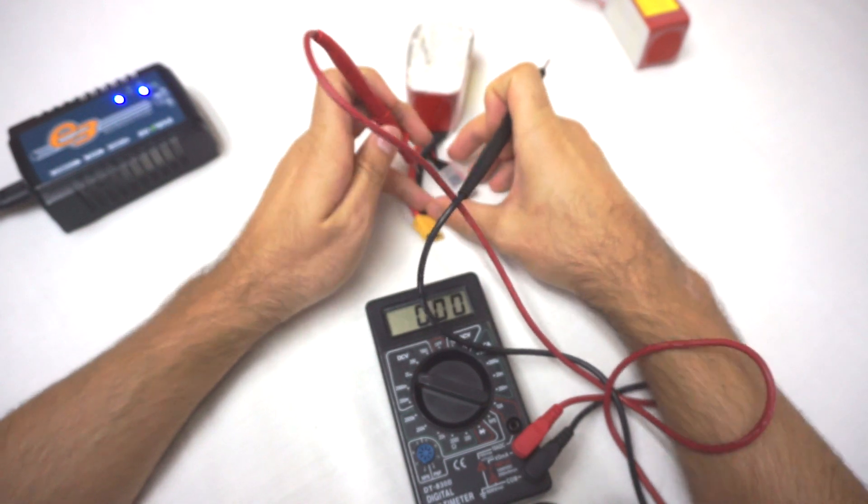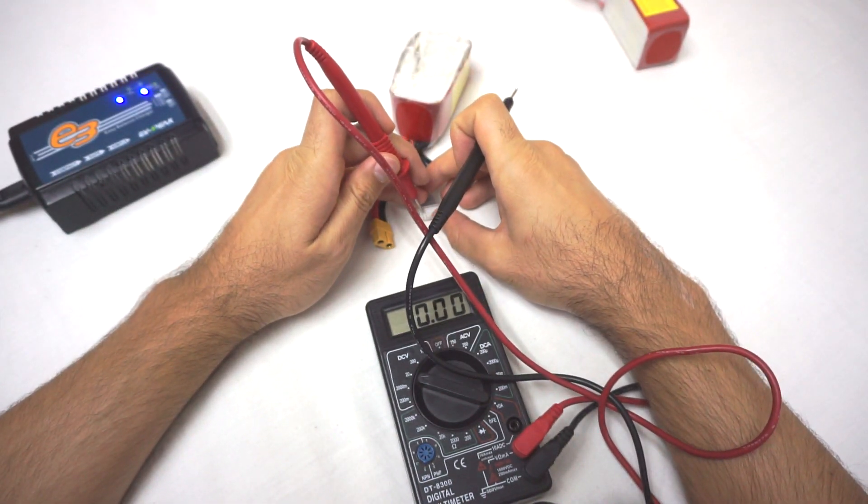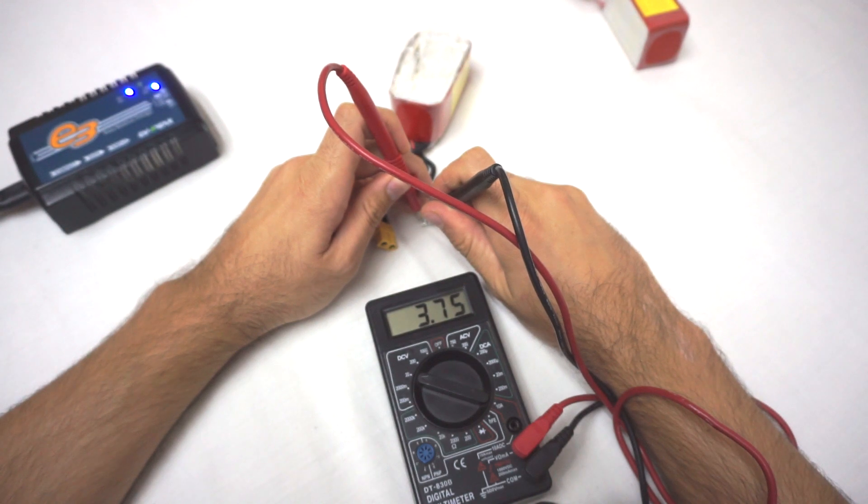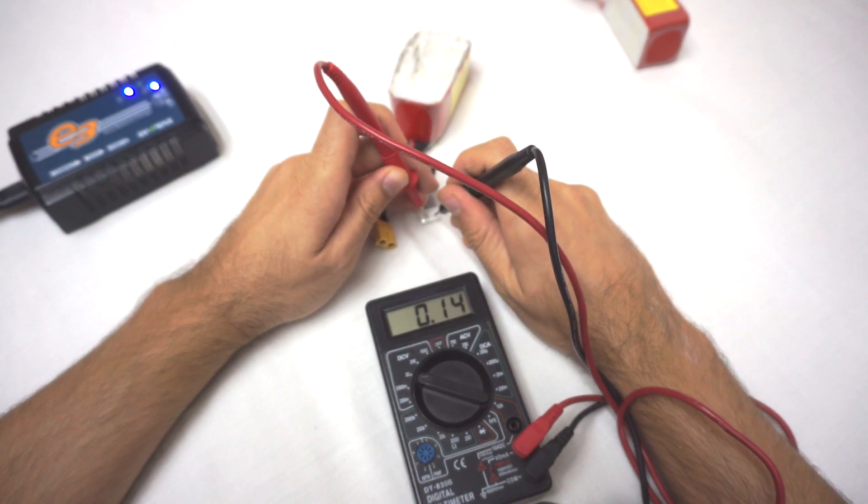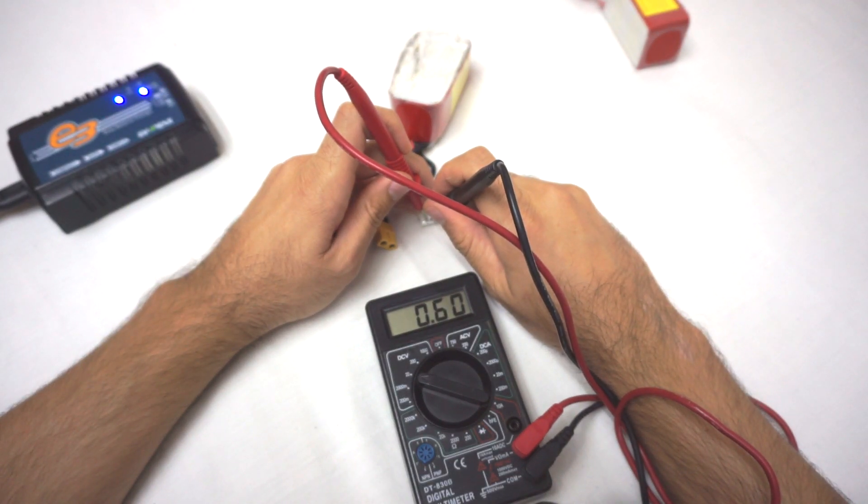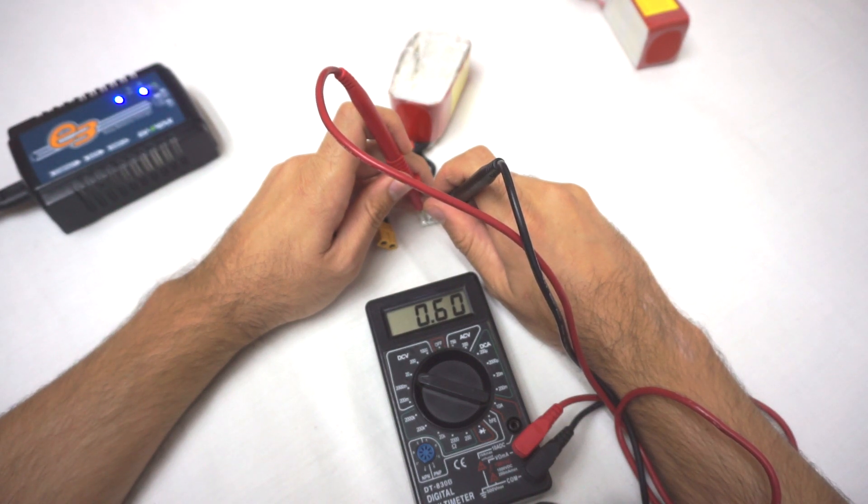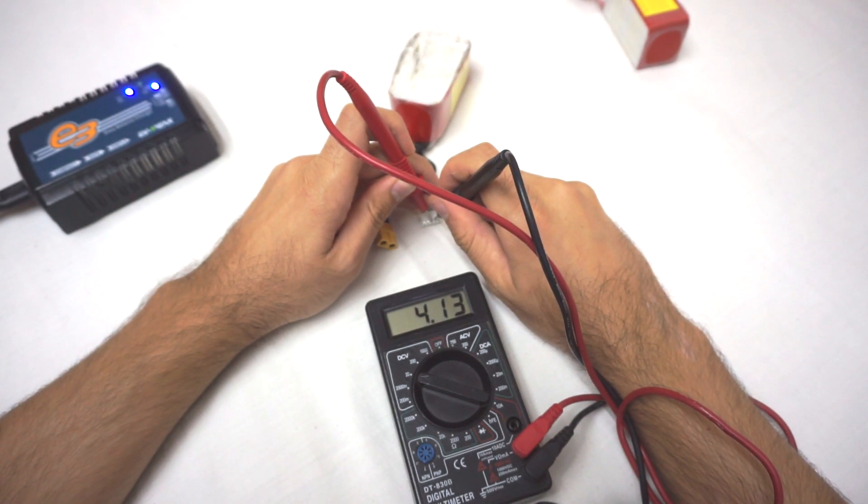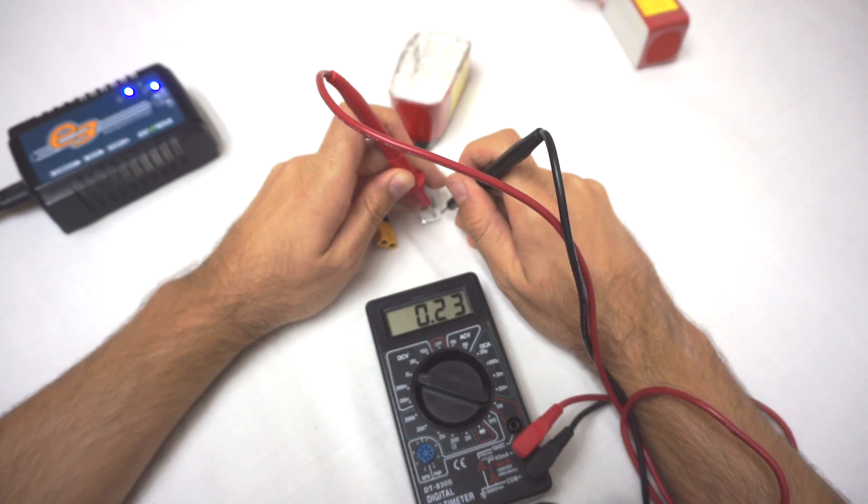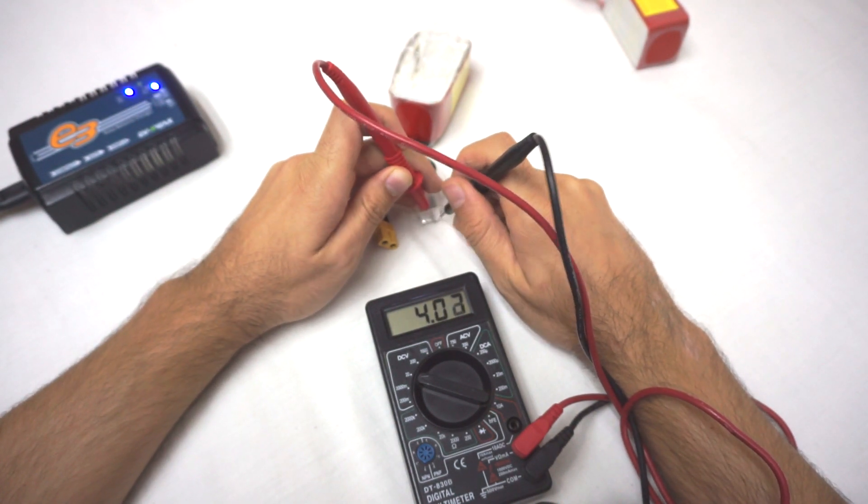And here's the damaged one. Let's see which cell is not right. That's not right. 3.7. That's almost okay. 0.6. No, that's not okay. And 4 point something. That's good. 4 point something. That's good.